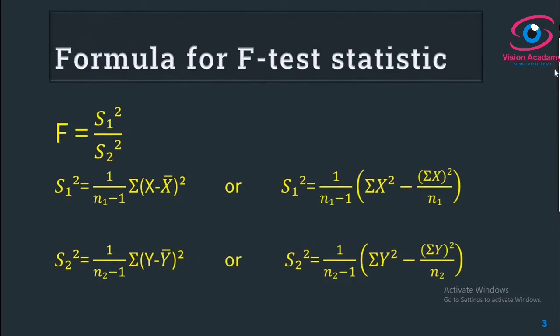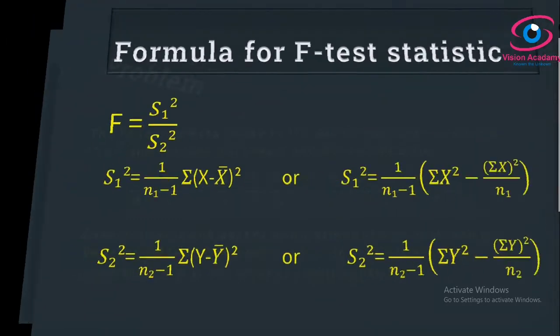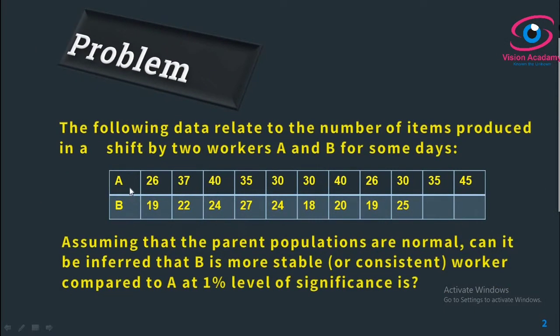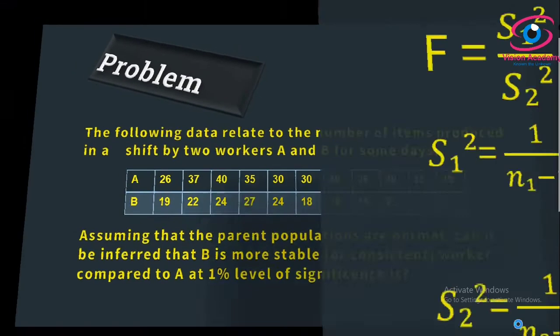This is the formula we need to approach for this problem. In this problem, they have given raw data — not S1 square or S2 square directly. So we have two populations here, worker A and worker B, and raw data is given. Using this raw data, we have to find the variance of worker A and the variance of worker B. After that, we apply the F-test. In my last video, the variances of A and B were given directly; now we have to find them.